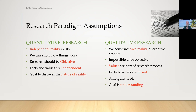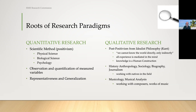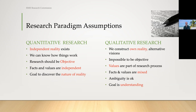Some assumptions when we look at the two paradigms are worth comparing and contrasting. Quantitative researchers say there is an independent reality, we can know how things work, it should be objective, and facts and values are independent — we want to understand the nature of reality. To quote my favorite Woody Allen movie, Love and Death, there's a line that says objectivity is subjective. So all of these things that quantitative researchers say they do in terms of trying to make things objective is subject to their own biases anyway.